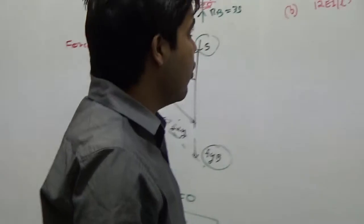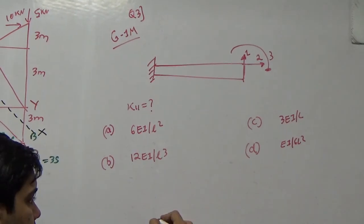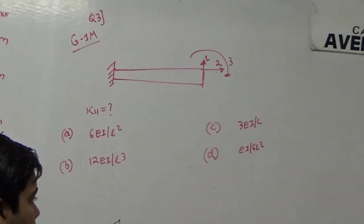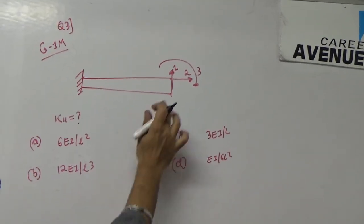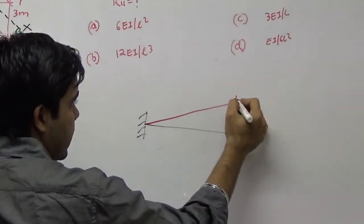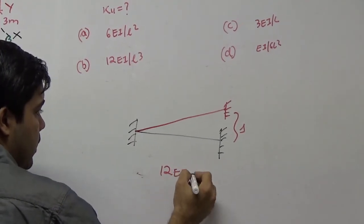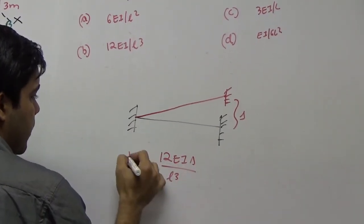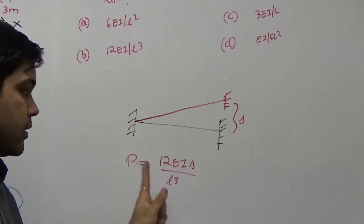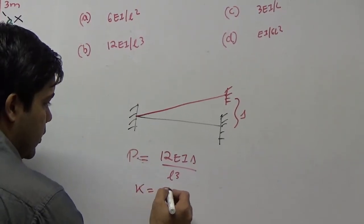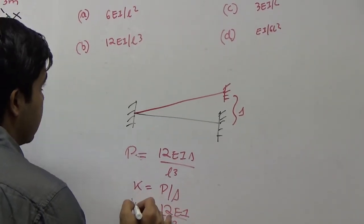The next problem is the easy one-mark question asking for the value of k11 in the stiffness matrix. When the far end is fixed and a displacement δ is applied, the force required to produce that displacement is P = 12EI·δ/L³. Therefore, stiffness k11 = P/δ = 12EI/L³, which is option B.